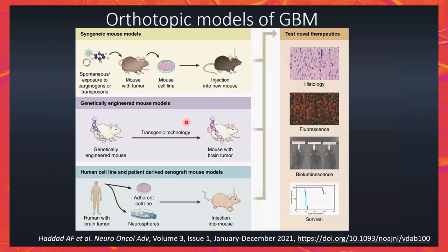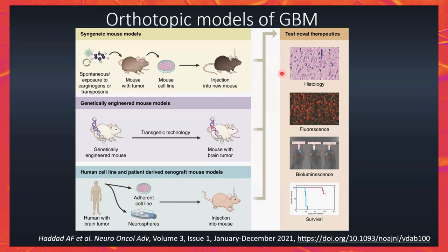Turning to the animal models, you can inject tumor cells into the animal brain. You can also have genetically modified animals where a particular gene — TP53 knockout, for example — would lead to growth of tumors, but these are very hard to control and very expensive, and the tumor take rate is very variable, so they are not routinely used by the imaging community. And there are the human tumor xenografts, where you take the patient's tumor, develop a cell line, inject it, or grow them as neurospheres. Every time you grow a tumor, you confirm them with immunohistochemistry, fluorescence imaging, bioluminescence imaging, or the endpoint of survival.